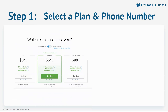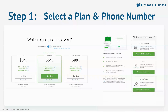Once you've selected a plan, choose your phone number. Grasshopper's options include toll-free, vanity, and local numbers, or you can port your existing phone number. Keep in mind that porting your number can take days or weeks depending on your previous carrier. Grasshopper offers number porting for free. Select 'use your current number' and you'll receive a temporary number and an email with instructions on how to start the number porting process.